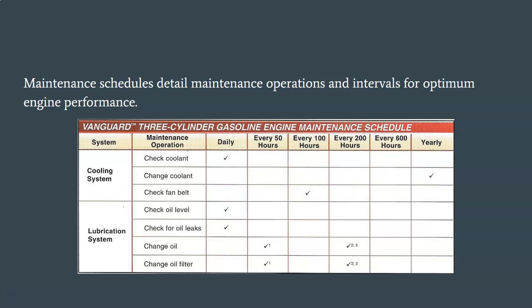Maintenance schedules detail maintenance operations and intervals for optimal engine performance. Cooling and lubrication system service procedures commonly performed include checking the oil, changing the oil and oil filter, and removing debris. The oil and oil filter should be changed according to the application manufacturer's recommendations. On air-cooled engines, debris may pass through the rotating screen and become lodged between the cooling fins, reducing cooling capacity and causing overheating; cooling fins should be cleaned every 100 hours of engine operation. On liquid-cooled engines, the coolant and fan belt should be checked and changed as required. Service should be performed more frequently if the engine is operated in dirty or dusty conditions, under heavy load, or in high ambient temperatures.